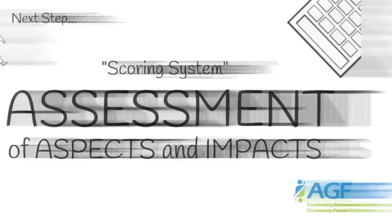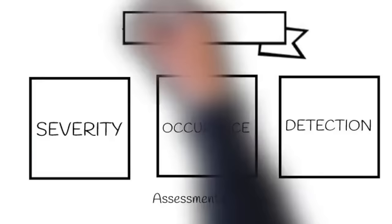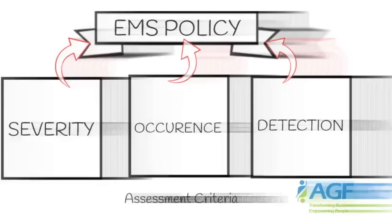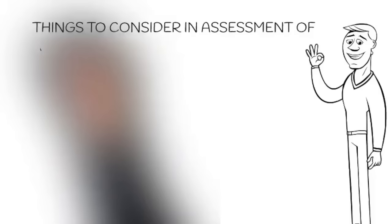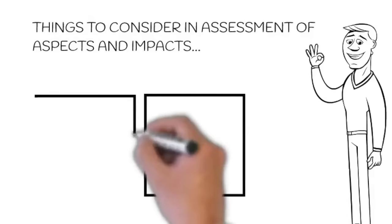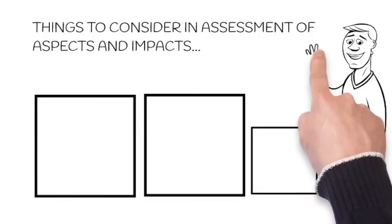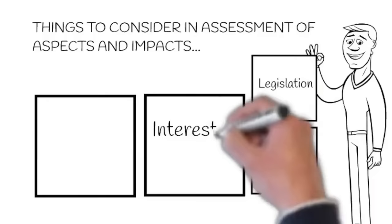The next step is to decide a scoring system, which could involve severity, occurrence, and detection. Relevant to your firm's environmental policy, cost, or environmental concern, make sure to award each environmental aspect a score to reflect the relative importance of the following items: legislation, the severity of environmental damage, reaction of interested parties such as customers and environmental groups, and quantity — for example, the volume of the waste type.